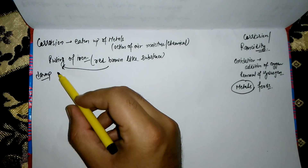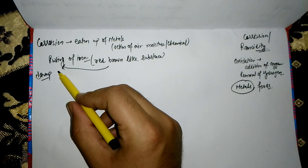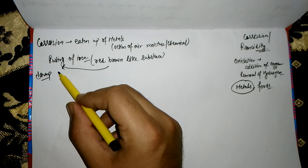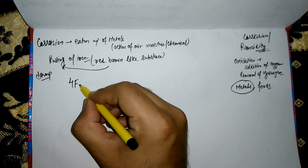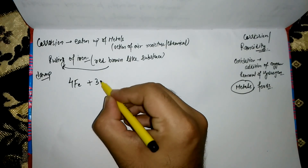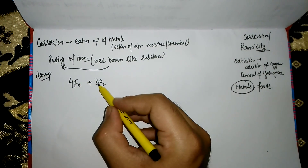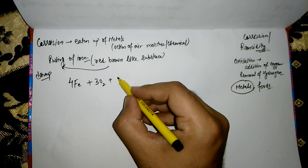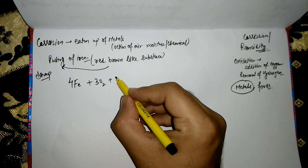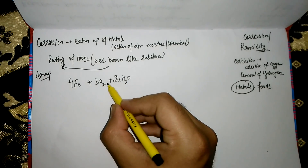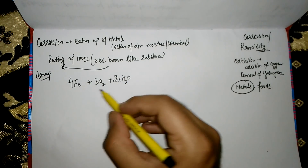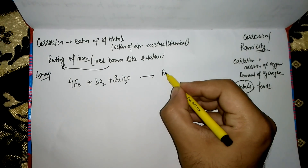During the corrosion or rusting of iron, the iron metal is oxidized by oxygen in air in the presence of water to form rust. If we leave a piece of iron exposed to air, it may also be exposed to rain or water molecules, and when these water molecules combine with oxygen and react with the metal, rust is formed.